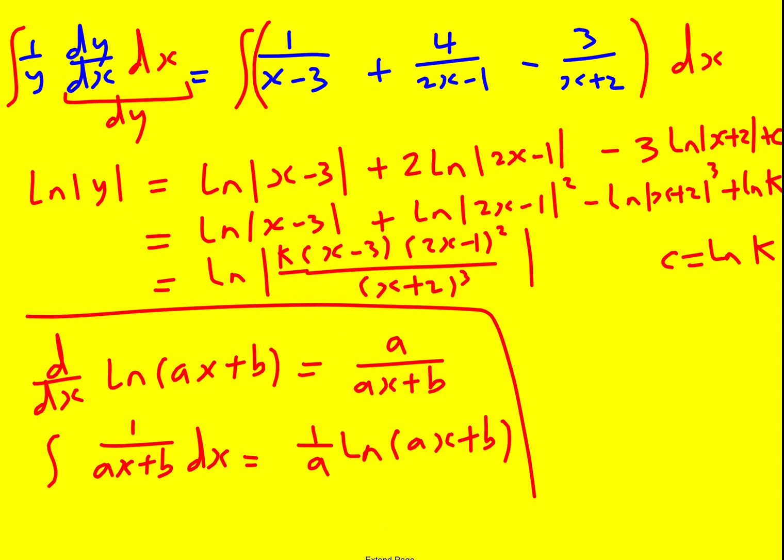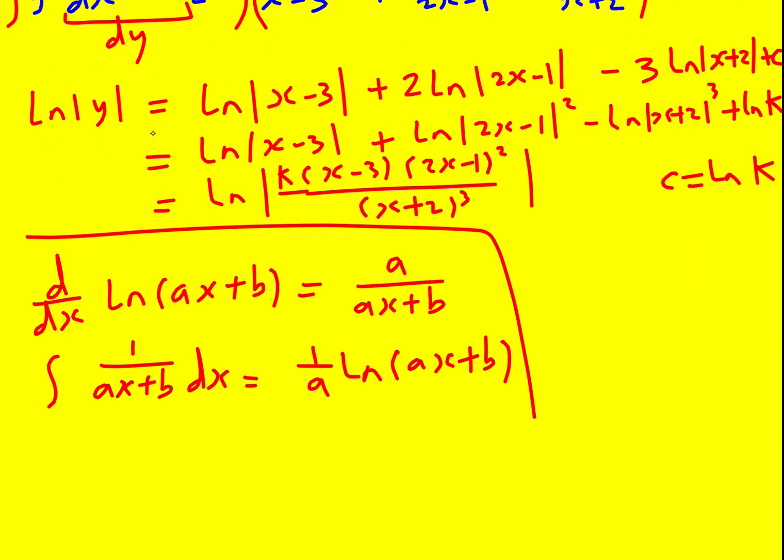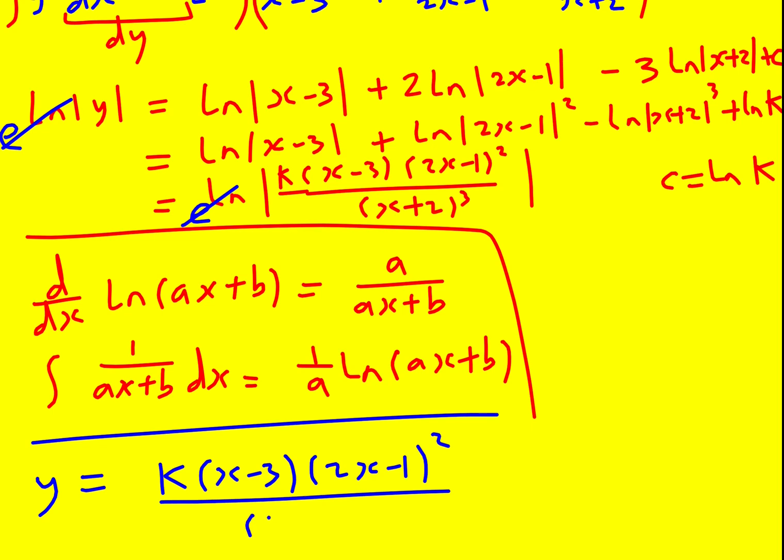Now if you have ln of something equals ln of something, you can just essentially ignore the ln's. Or you can imagine raising both the power of e, which cancels them out. And we're left with y equals. We can remove the modular signs now because there's no restriction anymore. x can be negative, no problems. We don't have to make it in modulus to ensure that we can take the logarithm. So y equals k times x minus 3 times 2x minus 1 squared all over x plus 2 cubed.